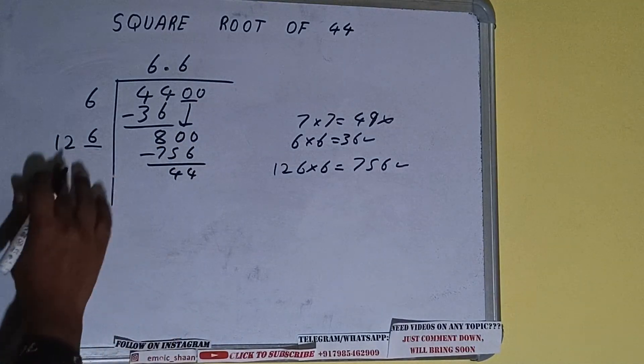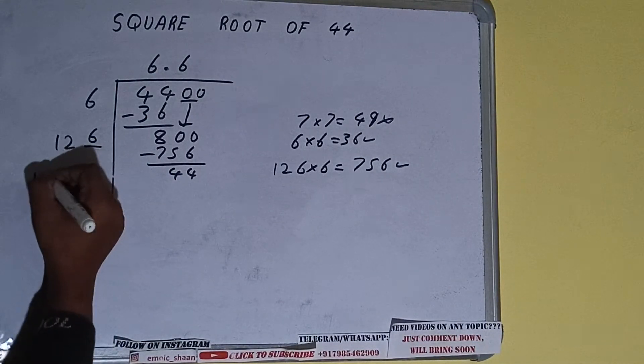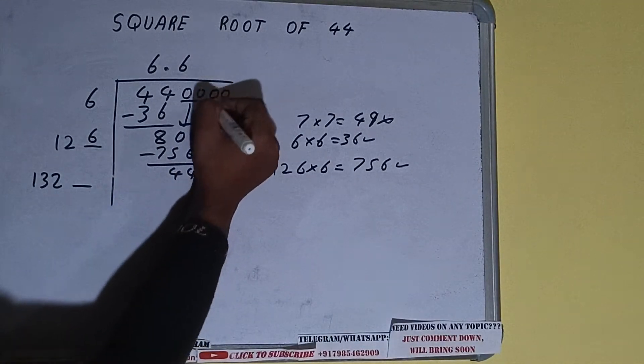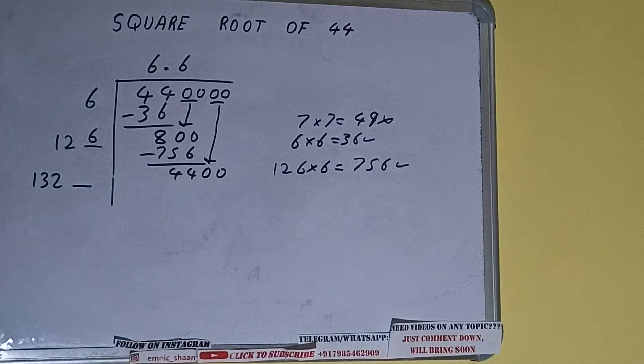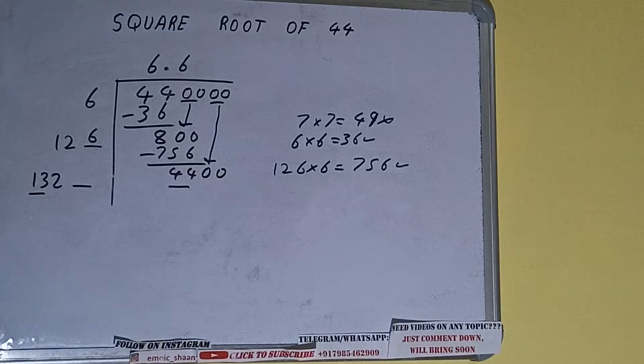Now 126 times 6 into 6 we did, so add both. So 126 plus 6 will be 132 and one digit extra. And this number we need to make it big, so bring the next pair of zeros down and number will become as 4400. Now compare this 13 with this 44. So 13 times 3 is 39, so we can try 3 times.